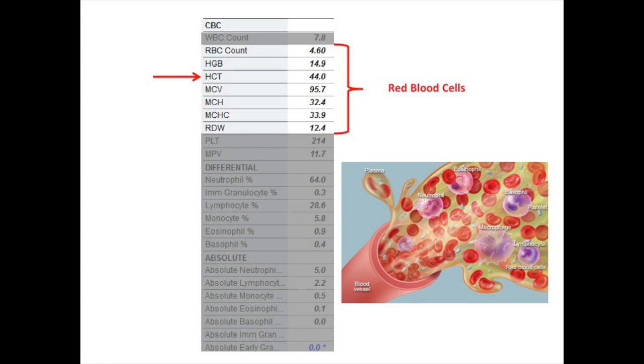Hematocrit measures the concentration of red blood cells, the value given as a percentage of red blood cells in a volume of blood. For example, a hematocrit of 44 means that 44% of the blood's volume is made of red blood cells.